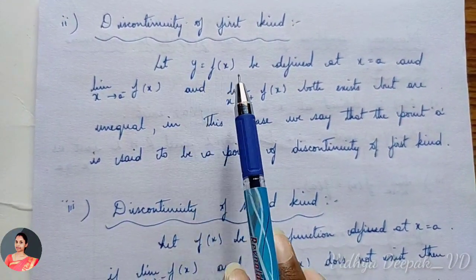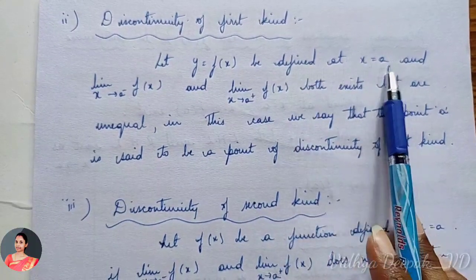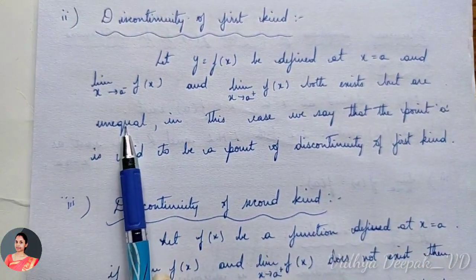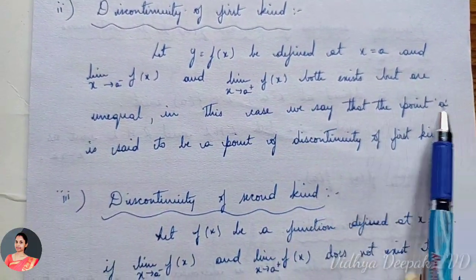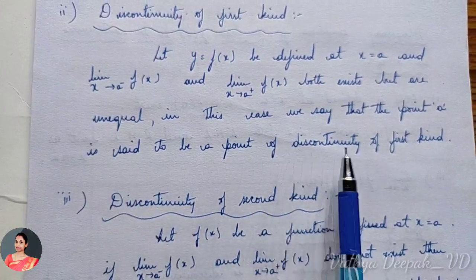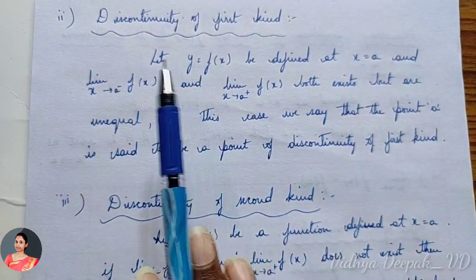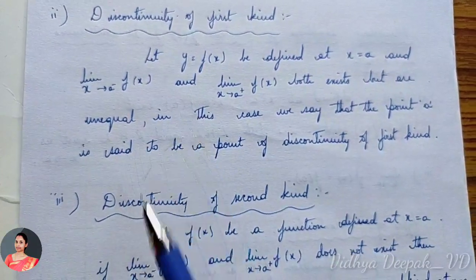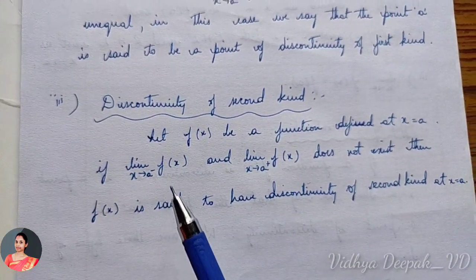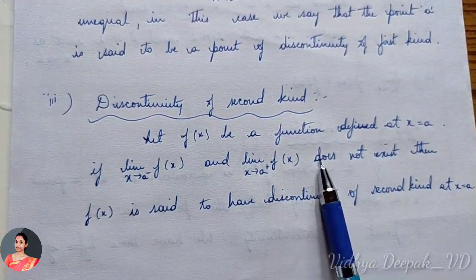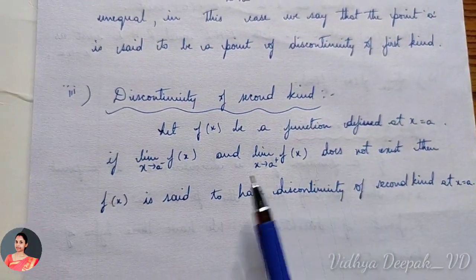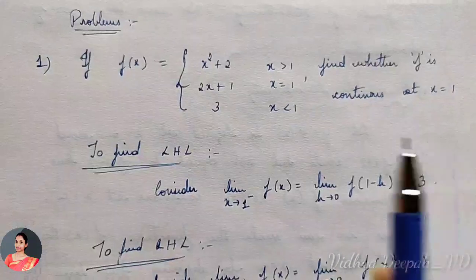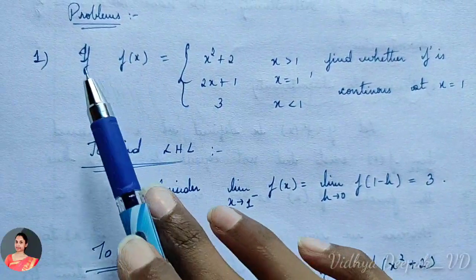Second type: discontinuity of the first kind. Let y = f(x) be defined at x = a. If the left-hand limit and right-hand limit both exist but are unequal, we say that point a is a point of discontinuity of the first kind. Third type: discontinuity of the second kind — where the left-hand limit and right-hand limit do not exist. Let us take an example for continuity of a function.